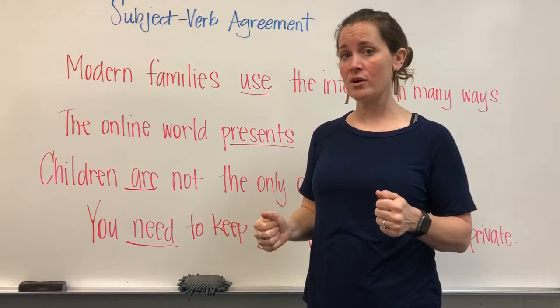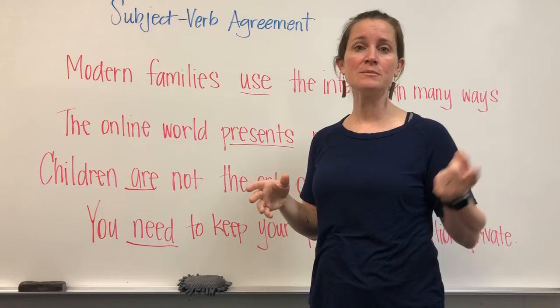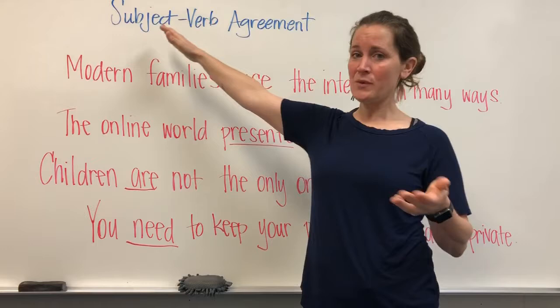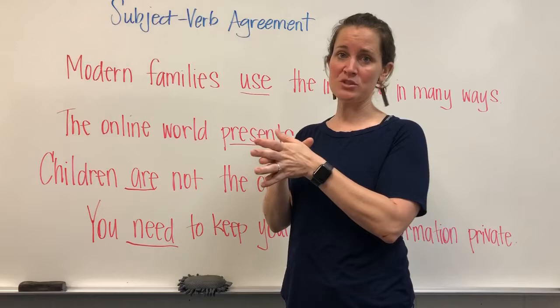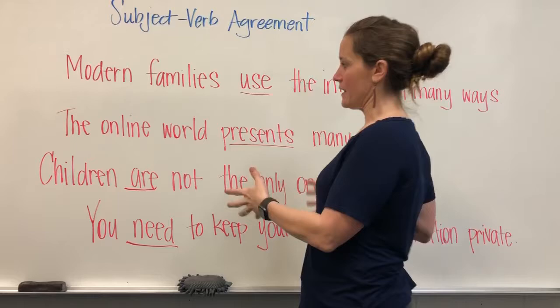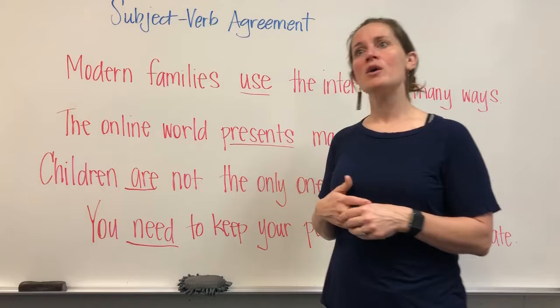As we go through here we're going to see both action and linking verbs. When we talk about subject-verb agreement, we're looking at our subject and deciding if it is singular or plural. Singular means one, plural means two or more. Once we decide if our subject is singular or plural, we need our verb to agree with that — our verb needs to be singular or plural going along with our subject.